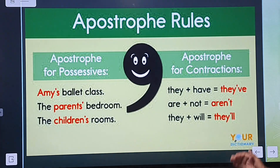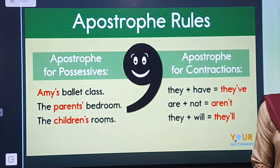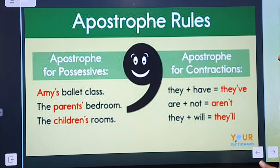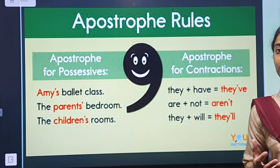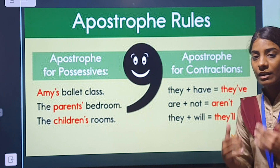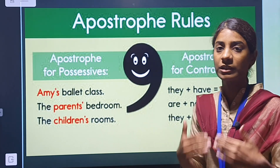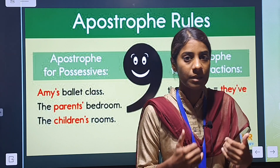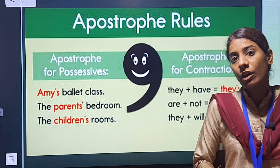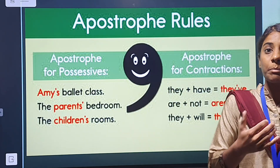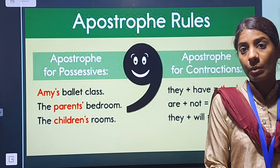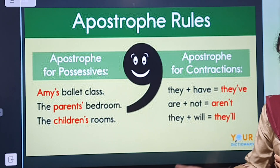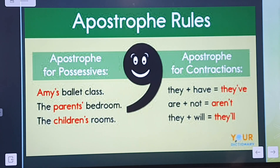So here are some apostrophe rules — where should we use the apostrophe? The apostrophe is used when someone is possessing something, when someone has a belonging or property. That is, to show possession — uska position batane ke liye, to show the possession.